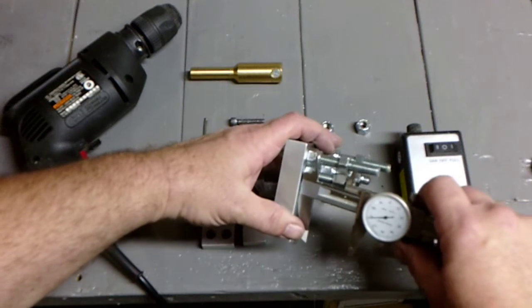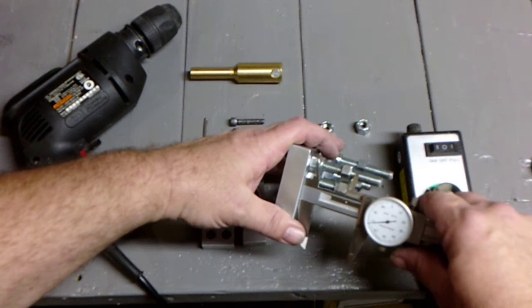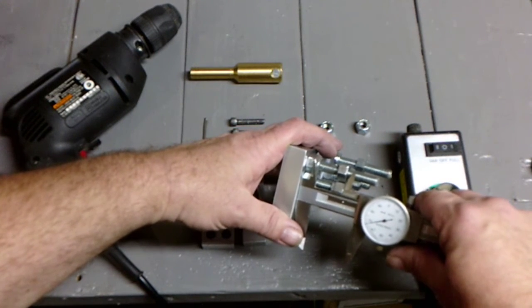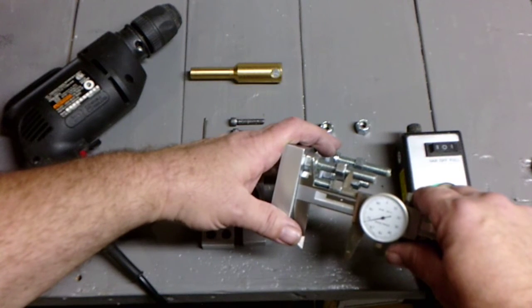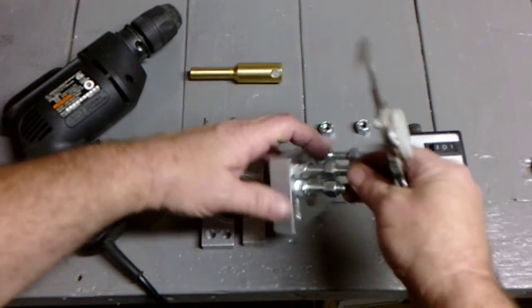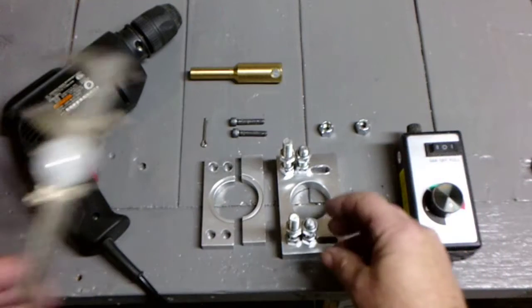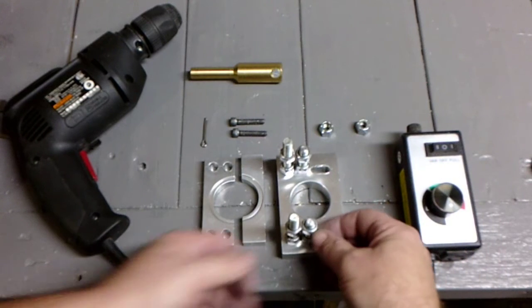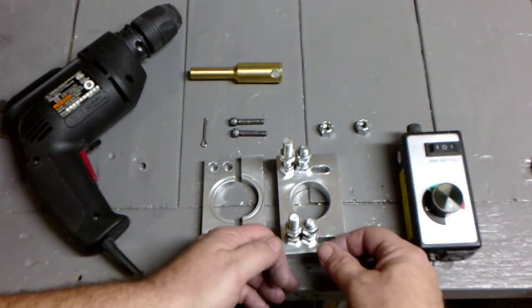Next set the spacing between the nuts. I have a three-quarter inch bed mount bracket so I set the spacing at one and a half inches. Make sure they're all spaced the same.